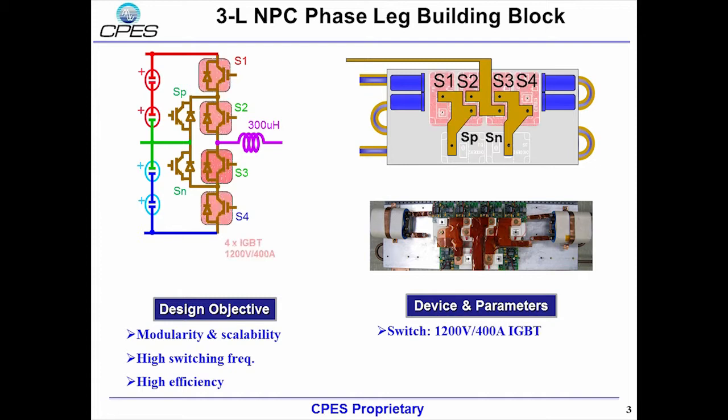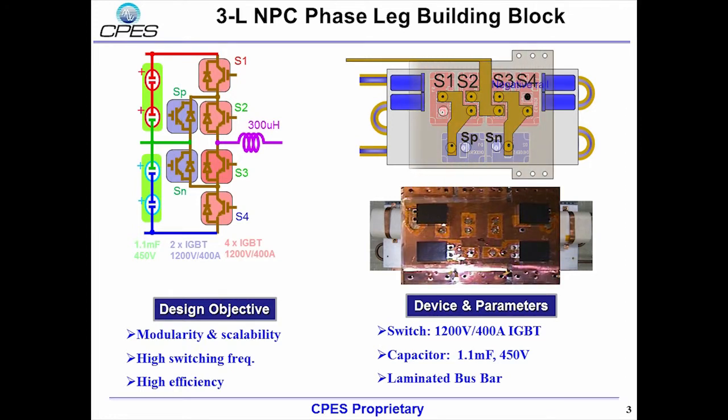There are four main switches and two clamping switches, all of which are 1200V 400A IGBT modules. The DC link capacitors are distributed to each phase lag. The laminated bus bars are used as positive, negative, and neutral rail to reduce the power loop parasitics.